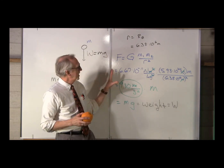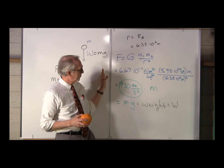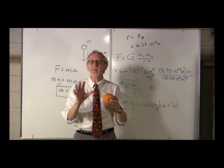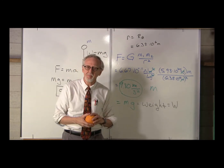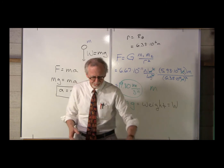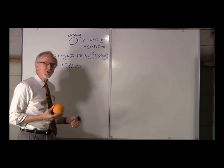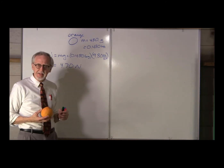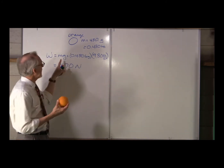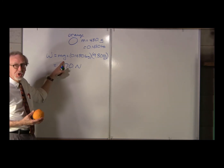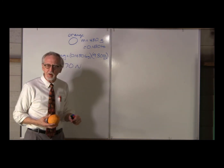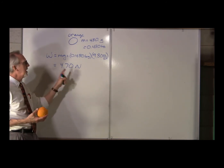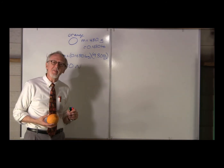That is a very good understanding of the difference between weight and mass. For this orange with a mass of 0.480 kilograms, it has a weight: weight equals mg, 0.480 kilograms times 9.80 meters per second squared, which gives us a weight of 4.70 newtons.